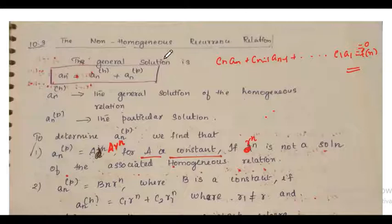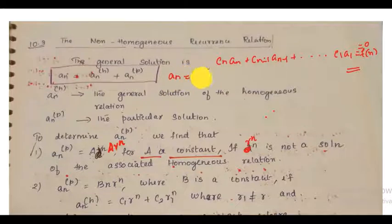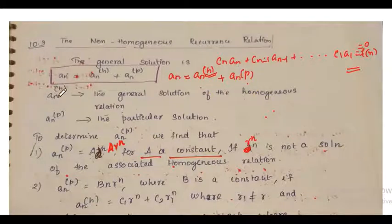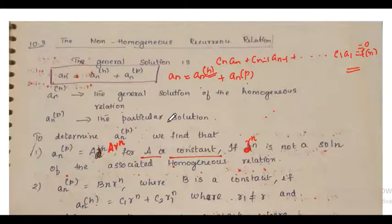The general solution here is a(n) = a(n)_h + a(n)_p, where a(n)_h is the general solution of the homogeneous part and a(n)_p is the particular solution.